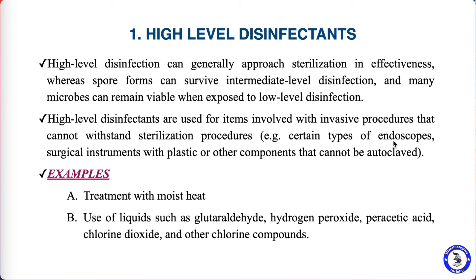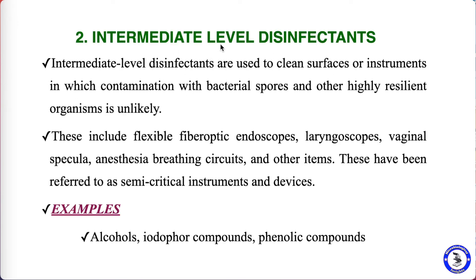High level disinfectants are used for items such as endoscopes — thin tubes with a powerful light and tiny camera used by doctors to study internal organs — and surgical instruments with plastic or other components that cannot be autoclaved. Examples of high level disinfection include treatment with moist heat and use of liquid chemicals such as glutaraldehyde, hydrogen peroxide, peracetic acid, chlorine dioxide, and other chlorine compounds.